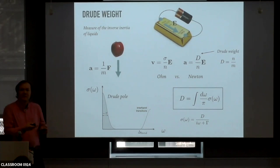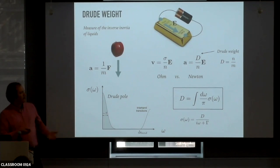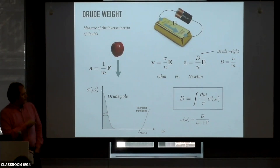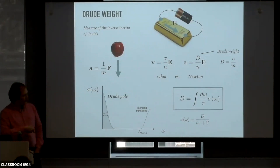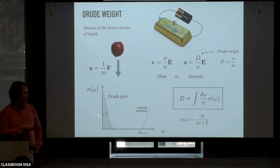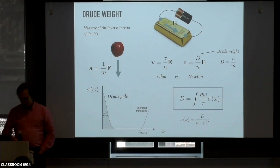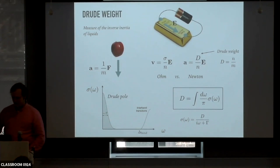The conductivity always has intertwined the information of the friction that the electrons are experiencing with their inertia. The Drude weight is a more fundamental notion when thinking about a fluid, because it's measuring its inertia. The friction will depend on how clean the material is, so it's extrinsic. More practically, what you will do to compute the inertia of the electron liquid is to integrate through the whole frequency range. The integral, if there is a good separation between inter-band and intra-band transitions, will measure the inverse inertia of the electron liquid.